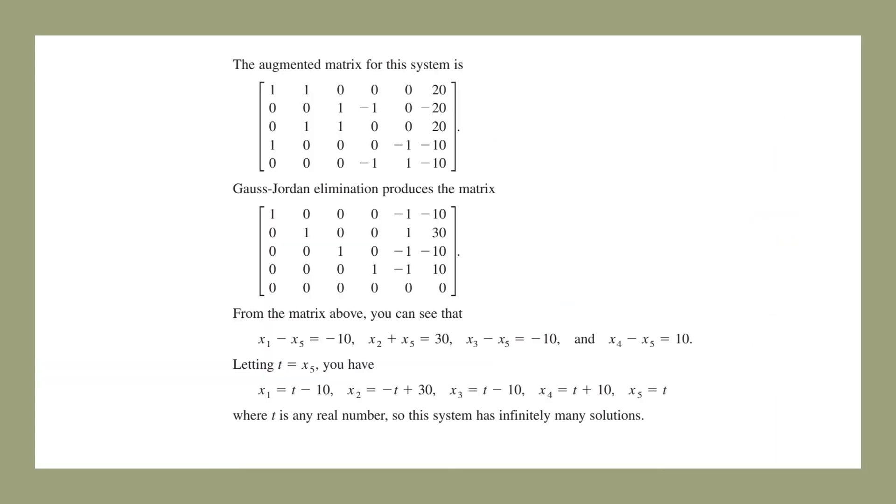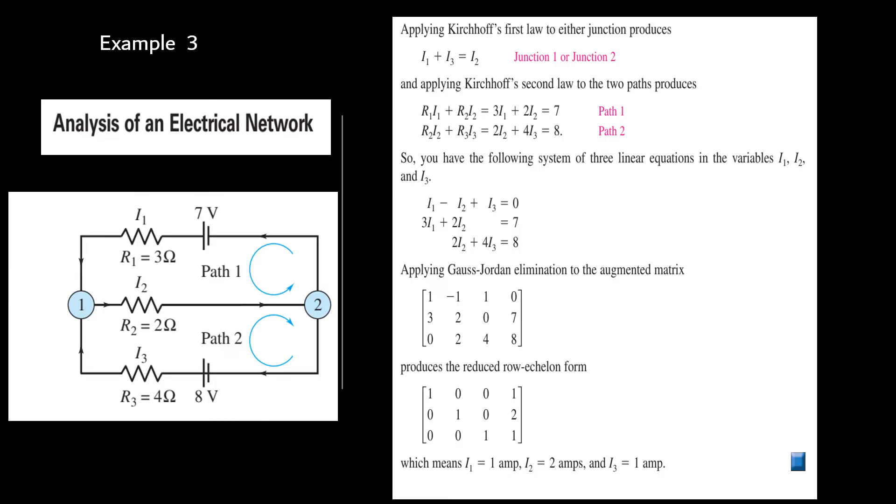And then we can take the augmented matrix, find the reduced row echelon form, which is the Gauss-Jordan elimination method. You can find what is your x1, x2, x3 and x4, x4 and x5. So the last equation is zero. So by treating it, it has a number of values here. By treating x5 as t, this x4 will be t plus 10. Likewise, you can find x3, x2 and x1.